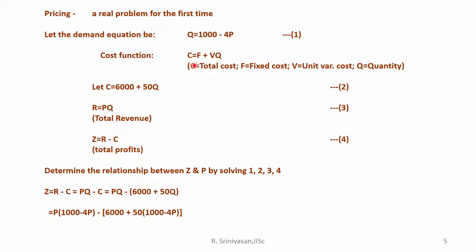How does the cost function represent itself? The cost function represents itself as C = F + V×Q. Here F stands for the fixed cost, V stands for the unit variable cost, and Q for the quantity. So your cost function is characterized by C = F + VQ. Suppose you give an equation for this cost function like 6000 + 50Q.